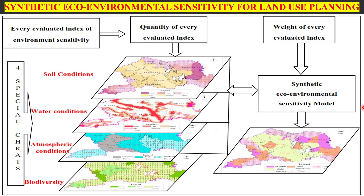I will now briefly discuss the technology of synthetic eco-environmental sensitivity for land use planning using GIS and the factor overlay method. In order to quickly obtain calculated results using advanced GIS technology, descriptive levels of information need to be converted into quantitative indexes and an index system is built. For basic environmental sensitivity units like soil, water, atmosphere, and biodiversity, conditions have to be evaluated and corresponding charts are prepared.